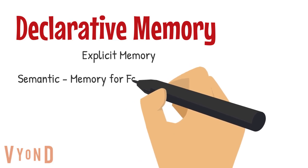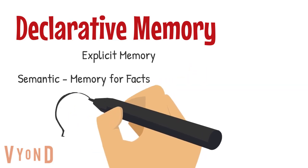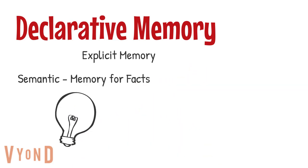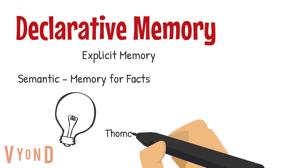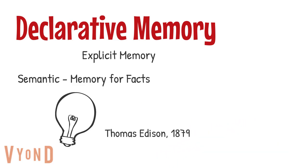Semantic memories are declarative memories for facts, like Thomas Edison invented the light bulb in 1879, or that George Washington was the first president of the United States.